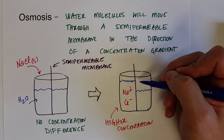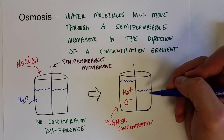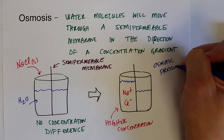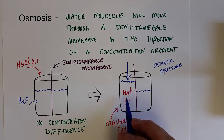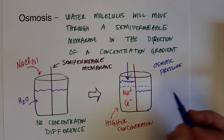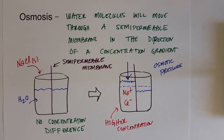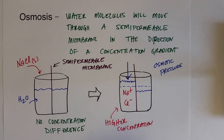As water becomes higher on the left side than the right, there's also a pressure difference — higher pressure on the membrane on the left side. That's what osmotic pressure measures. If you ask how much pressure you'd need to push on the left side to push the water back to equal levels, that pressure value is the osmotic pressure set up by this concentration difference. Your cell's phospholipid bilayers are semipermeable membranes, so concentration differences inside and outside cells cause water to flow and set up osmotic pressure.